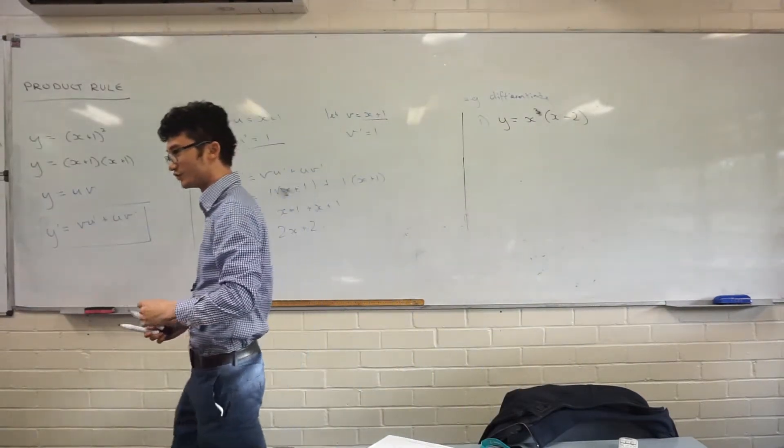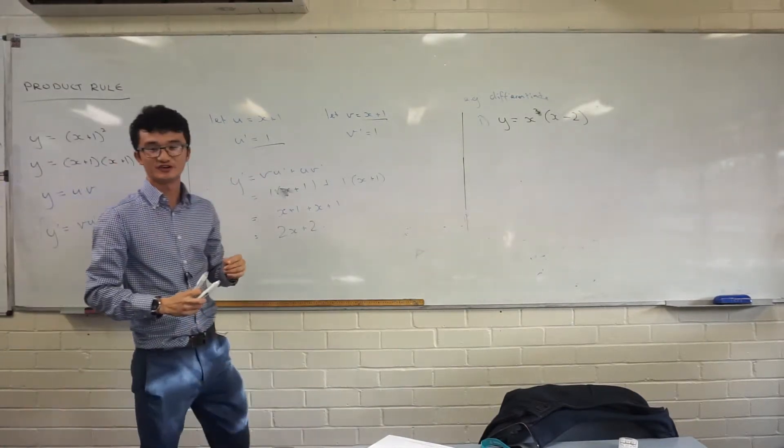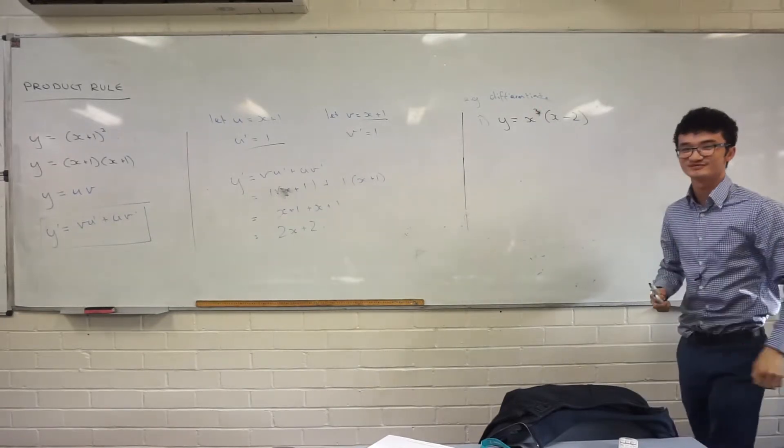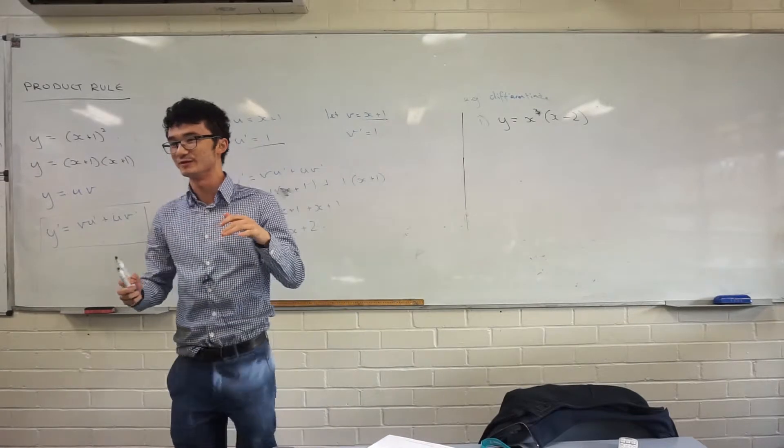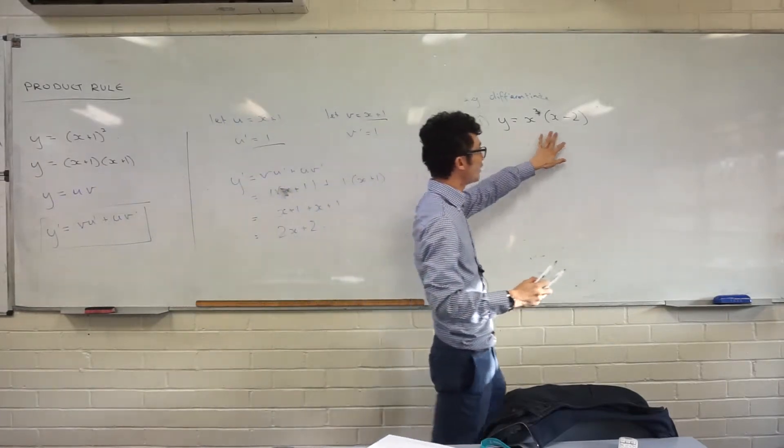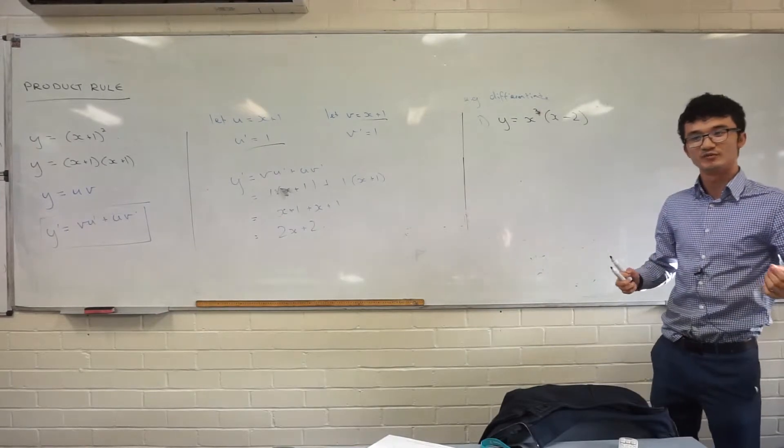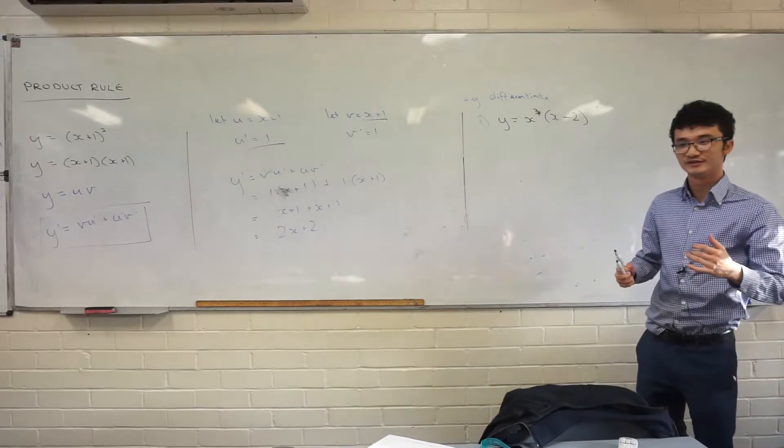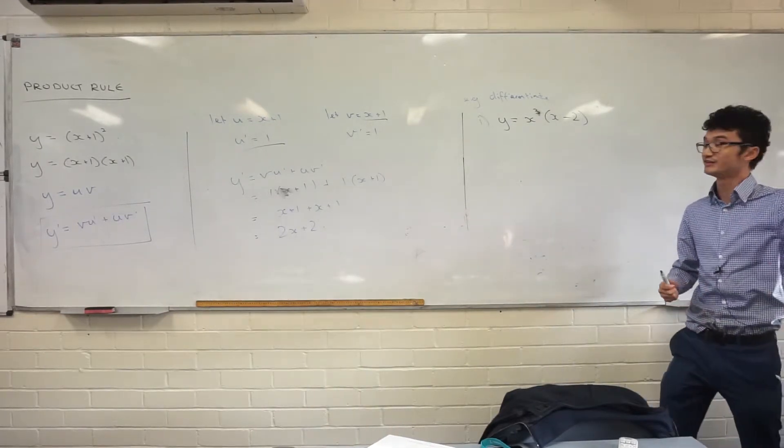So the key with using the product rule is you're always thinking, hey, what are the two functions that I've got? What are my two functions here? I want to try and see, where can I see two functions being multiplied? So I'm having a look at this one here. I've got y is equal to this expression. That's one expression, one function. But can I see within there, are there two functions being multiplied together? Yeah. What are they?